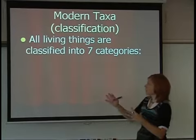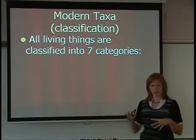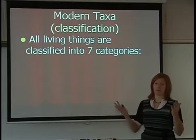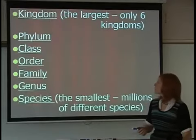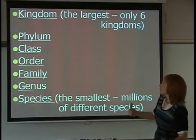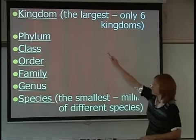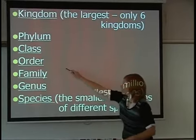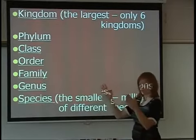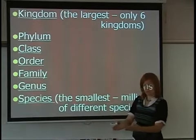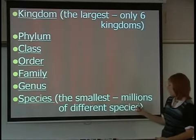When we classify, all living things are put into seven categories. Kingdom is the largest, and as you go down through phylum, class, order, family, genus, and species, it gets to a smaller piece of the classification, where species is the smallest.